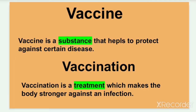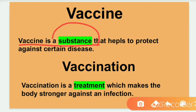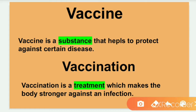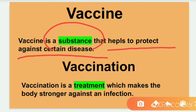Let's talk about the definition. Vaccine is a substance that helps to protect against certain diseases. Vaccine is a substance that helps our body to protect against disease. Vaccine is a substance that makes the body stronger against an infection.